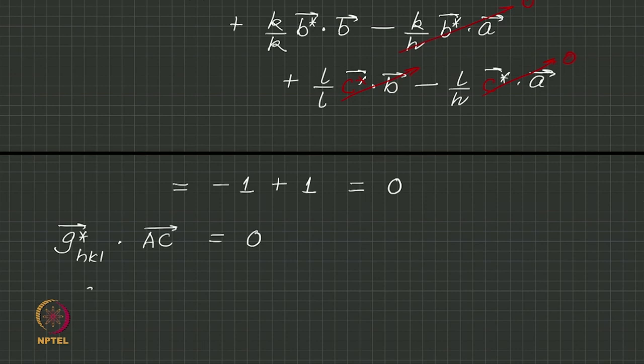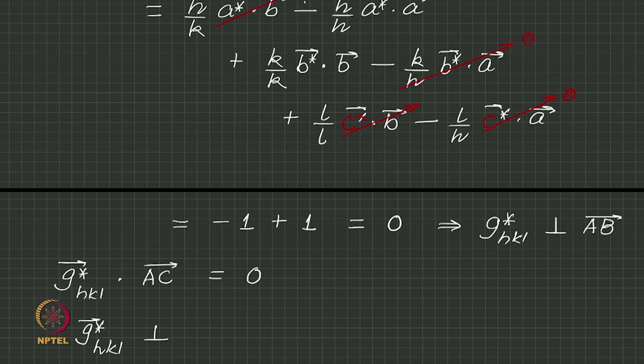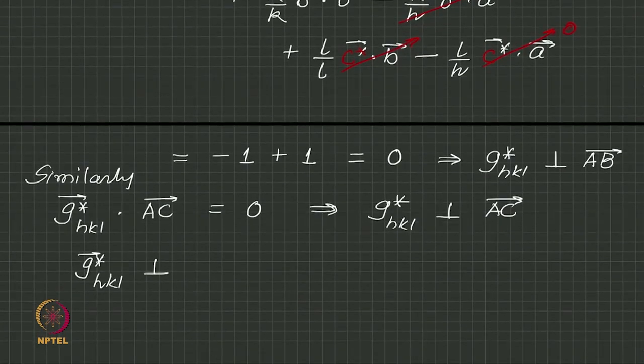What is it indicating? It is indicating that g star h k l is perpendicular to the first 0. Perpendicular to the first 0 indicated that g star h k l was perpendicular to a b. And the second 0 indicates that g star h k l is perpendicular to a c.